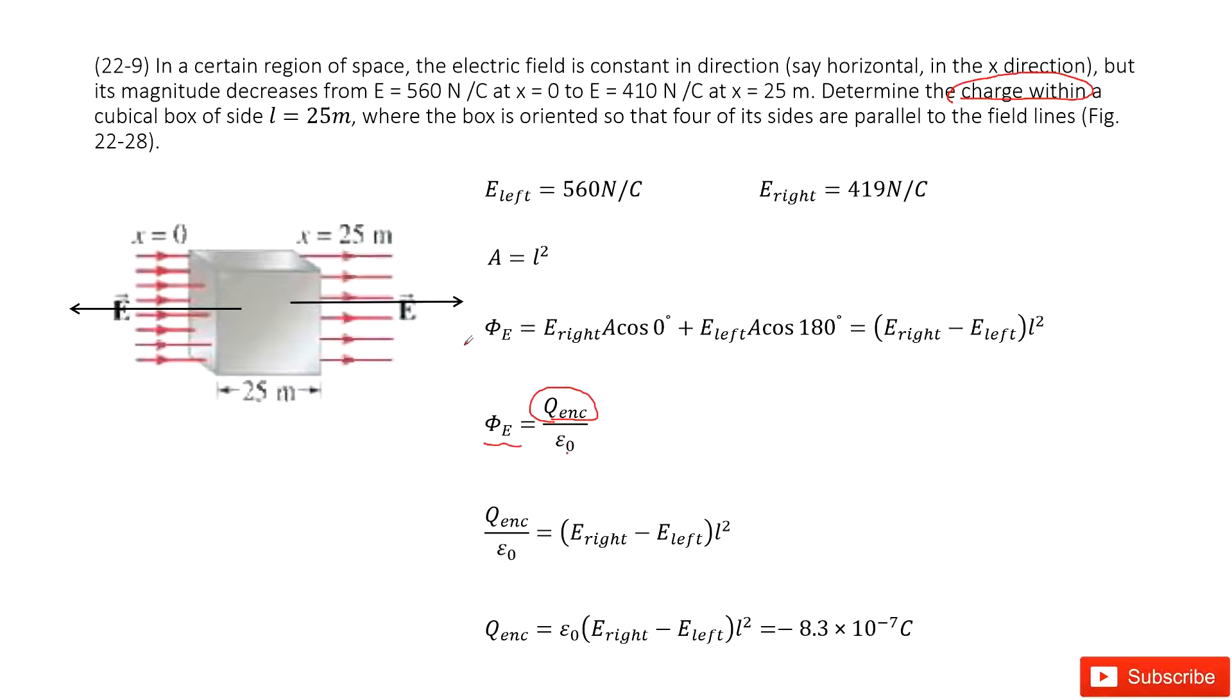Electric flux, by definition, is E A cosine theta. For this case, we first look at the right side. E is given, A is the cross-sectional area of the face of this cube. A is L squared.